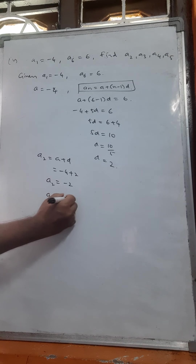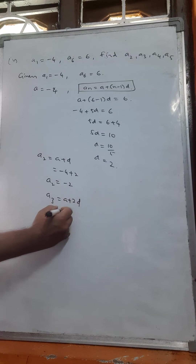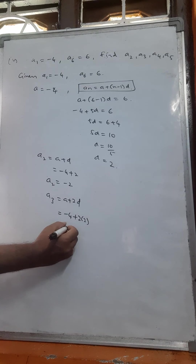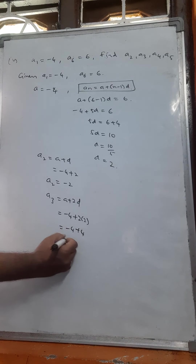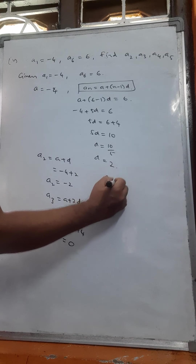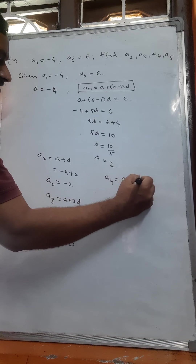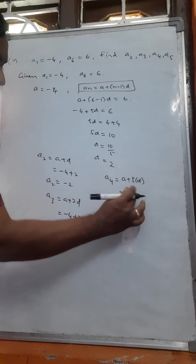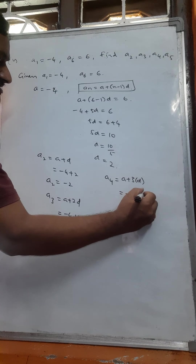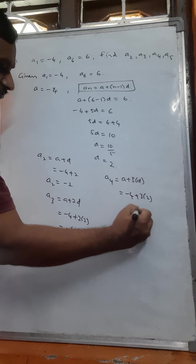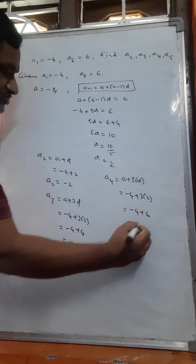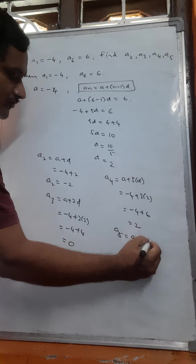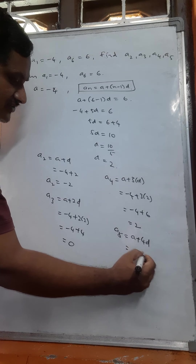a3 means a plus 2d: minus 4 plus 2 into 2 equals minus 4 plus 4 equals 0. a4 means a plus 3d: minus 4 plus 6 equals 2. a5 equals a plus 4d: minus 4 plus 8 equals 4.